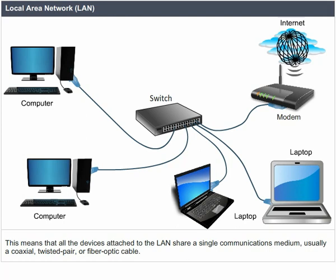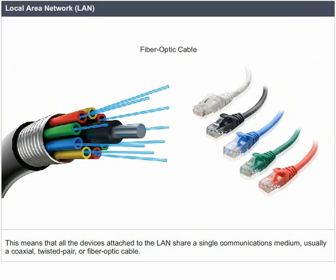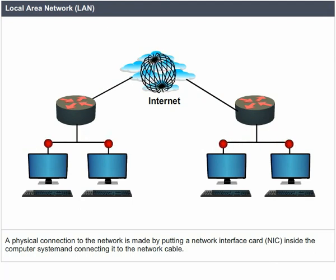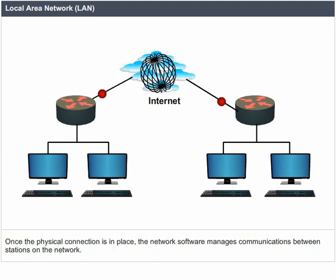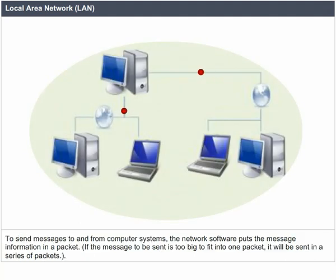All devices attached to the LAN share a single communications medium, usually a coaxial, twisted pair, or fiber-optic cable. A physical connection to the network is made by putting a network interface card inside the computer system and connecting it to the network cable. Once the physical connection is in place, the network software manages communications between stations on the network. To send messages, the network software puts the message information in a packet.